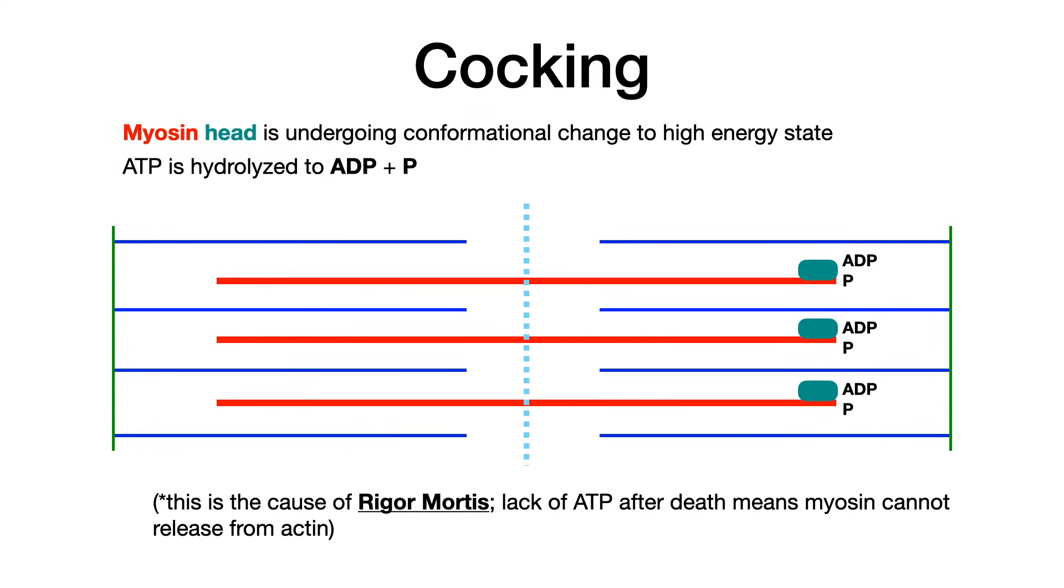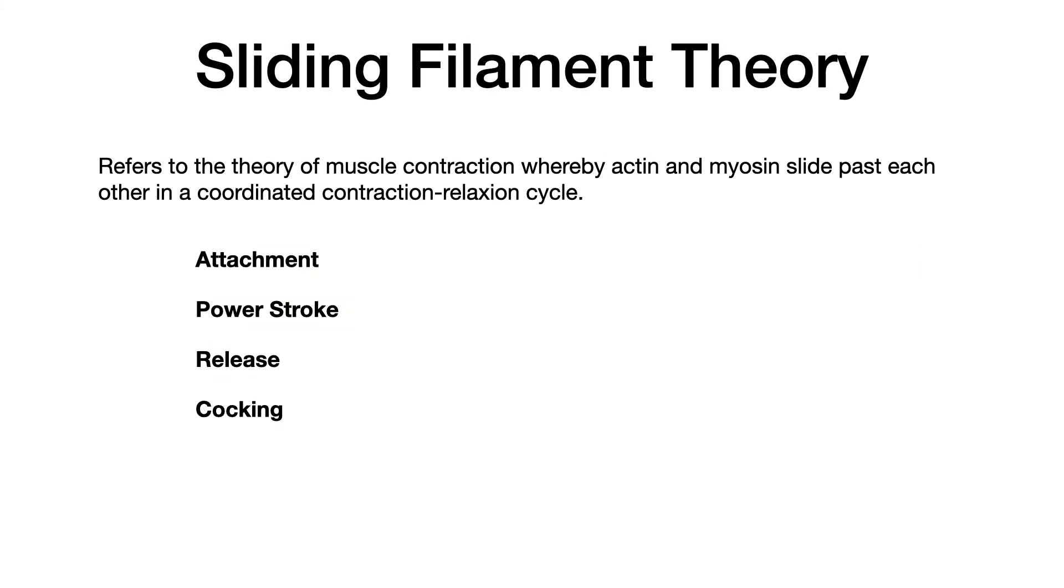So that's release, the myosin head uncocks and ATP binds to myosin, promoting it to release from actin. And then the last stage is cocking. And in cocking, the myosin head is undergoing a conformational change. So it's basically going from a low energy state to a high energy state in anticipation of going through the whole cycle again and attaching. And in this case, the ATP that allowed the myosin head to release from the actin is hydrolyzed to ADP plus phosphate. And so you've got ADP plus phosphate reattached to the myosin head. And now the myosin head is in a higher energy state. It's cocked and it's ready to attach to the actin and start the cycle all over again. So those are the four stages. Again, what you want to know is attachment, power stroke, release and cocking. These are the four stages of the sliding filament theory, which again describes how actin and myosin slide past one another, shortening and elongating the sarcomere, promoting muscle contraction.